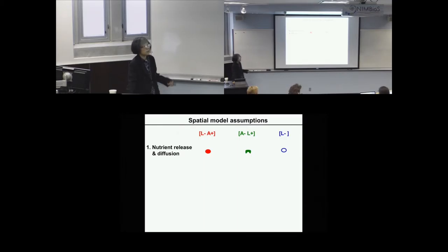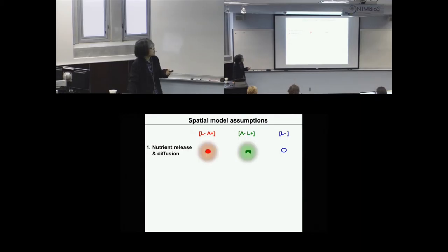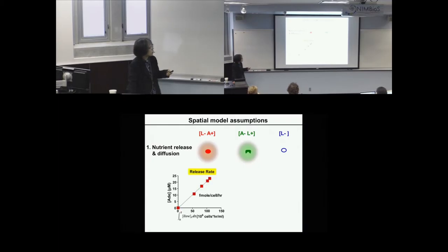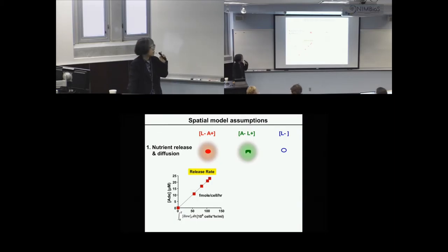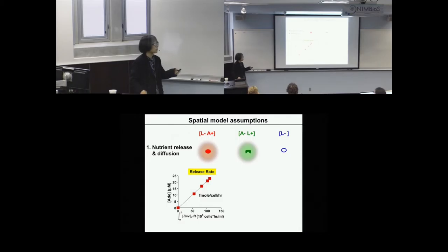To understand how this works, we constructed a spatial model describing how cells grow into communities, with three assumptions. First, nutrient release and diffusion: cooperators and partners release nutrients that diffuse into the environment. To measure release rate, we looked at how adenine concentration in the supernatant relates to live cell density integrated over time. From the slope we get the release rate in femtomoles per cell per hour. Measuring these parameters is extremely difficult because cell physiology changes and the rate changes accordingly — but we found a way to obtain reliable experimental data. The diffusion constant was measured by watching how a fluorescent dye travels as a function of time.